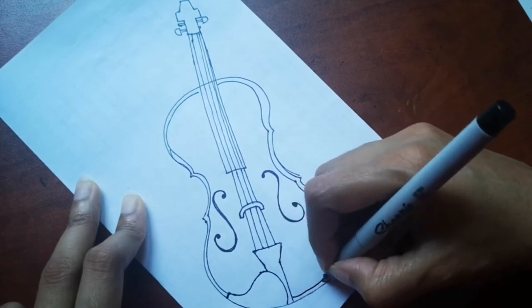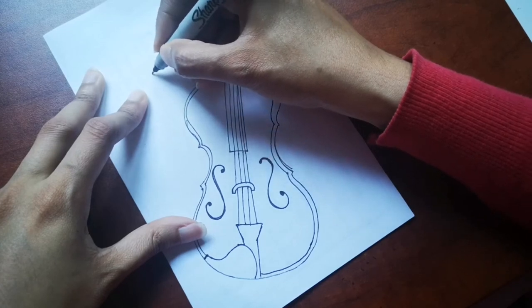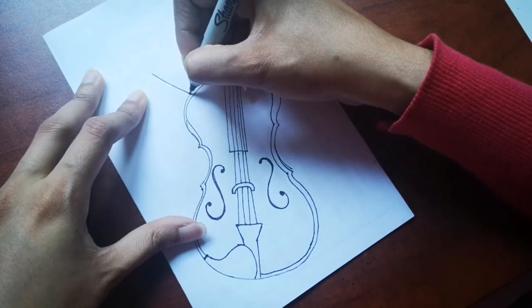So now we are almost done with the violin part, but we are still not done because we have to draw the bow.